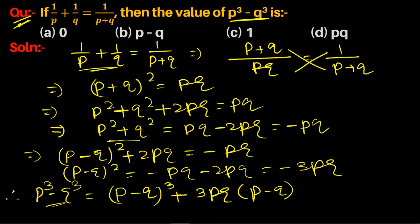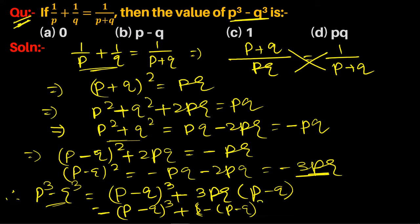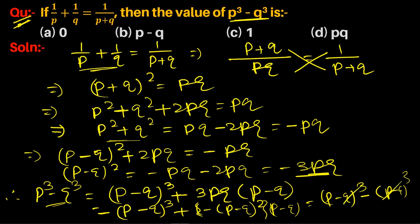Therefore, p³ - q³ = (p - q)[(p - q)² + 3pq]. Substituting (p - q)² = -3pq, we get (p - q)[-3pq + 3pq] = (p - q)(0) = 0. So option A, which is 0, is the correct answer.